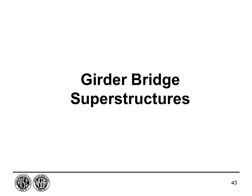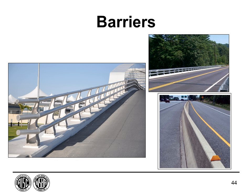Starting at the top of the structure, the first element is barriers. Various types of barriers vary based on owner preference and structural requirements. Vehicular barriers must be crash tested, with requirements based on design speed and traffic volume. Pedestrian railing has height requirements depending on whether used by pedestrians only or also by bicyclists. Aesthetic options are also available based on owner preference.